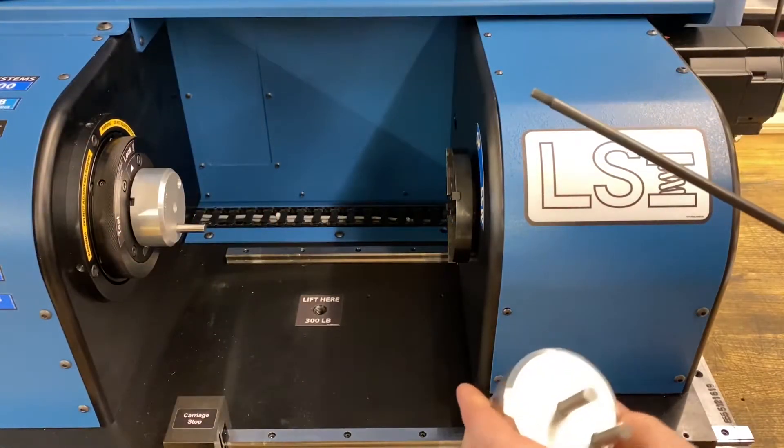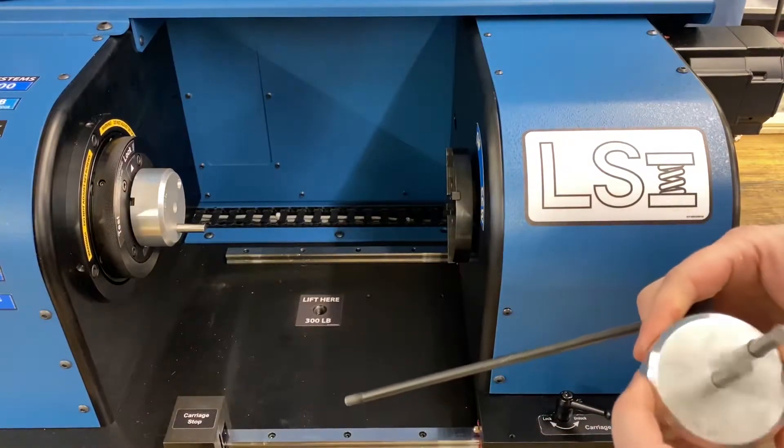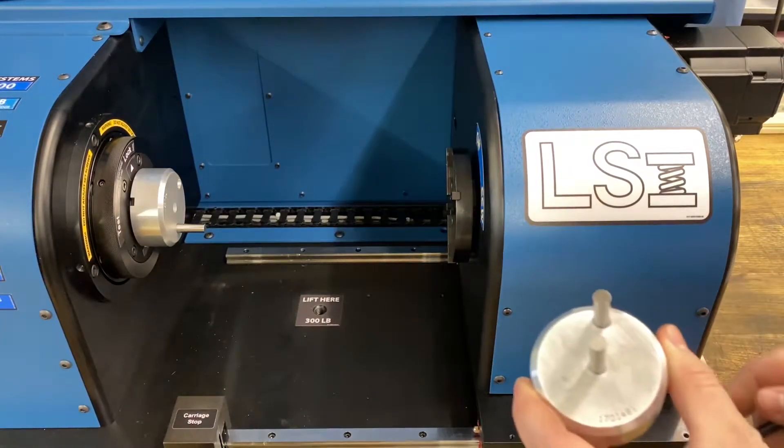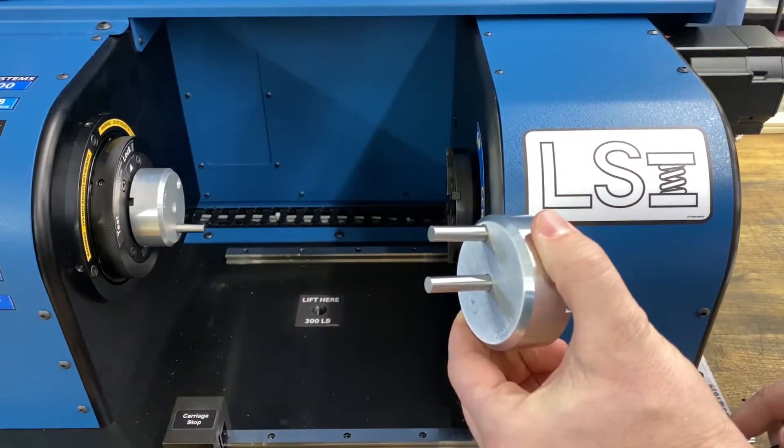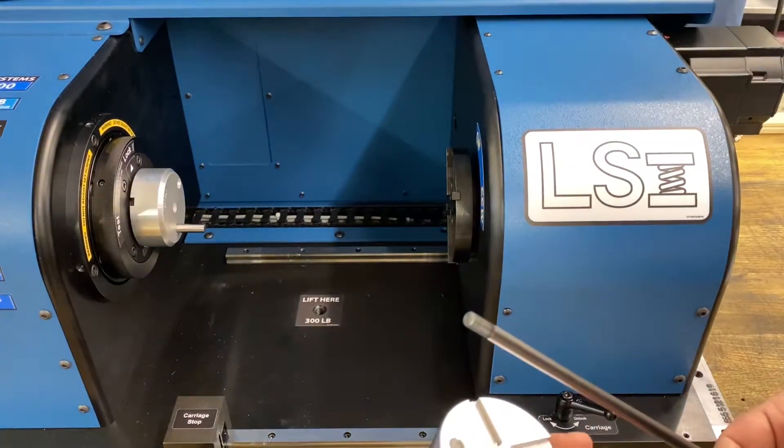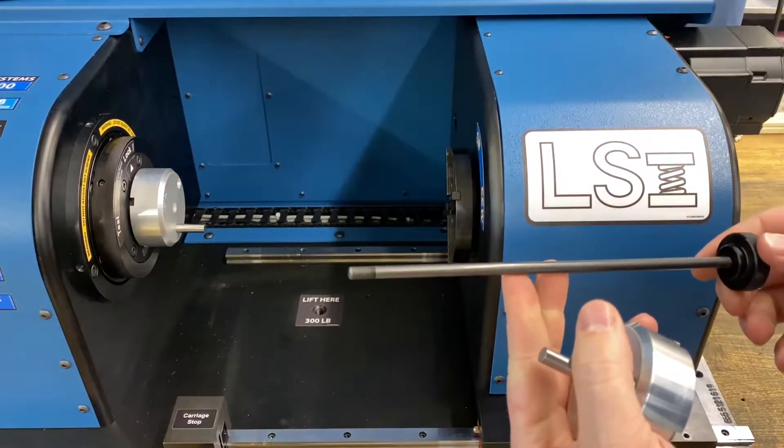This is a tail stock side. It's usually two pins like that, but depending on your tooling it might be different. Again, you tighten it using the tail stock draw bar.